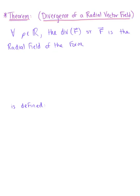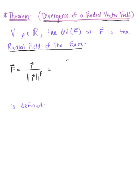Here we are exploring a theorem that looks specifically at the divergence of a radial vector field. For all real numbers p, the divergence of a vector field F is the radial field of the following form: we define this radial field vector F as vector r divided by the magnitude of vector r raised to the pth power. This is equivalent to the vector with components x, y, z, all divided by the magnitude — so we have x squared plus y squared plus z squared, all raised to the p over 2.